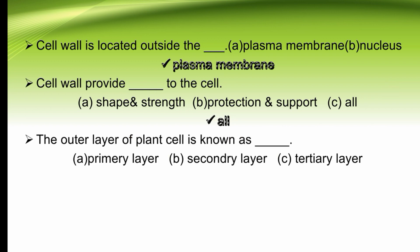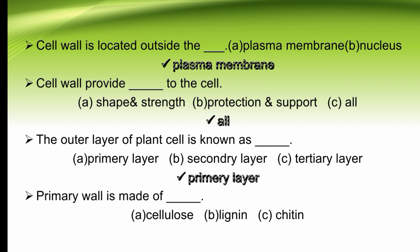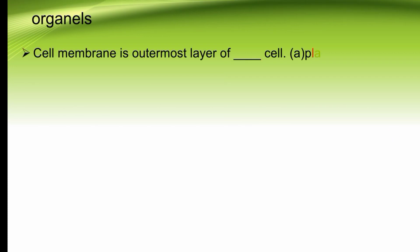The outer layer of a plant cell is known as dash — primary layer, secondary layer, or tertiary layer. The outer layer of a plant cell is known as the primary layer. The right option is A. Primary wall is made of dash — cellulose, lignin, or chitin. The right option is cellulose. Cell membrane is the outermost layer of dash — plant cell or animal cell. Cell membrane is the outermost layer of animal cell, while cell wall is the outermost layer of plant cell.